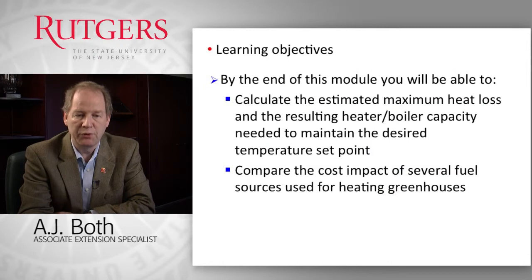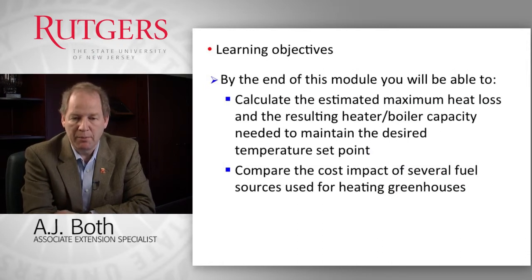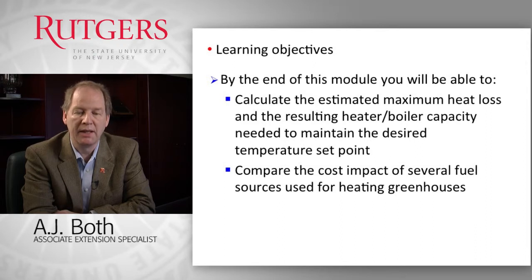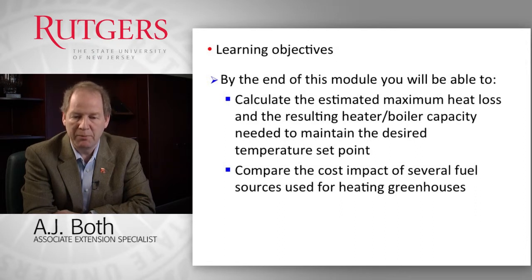The learning objectives for this module are: first, by the end of this module you will be able to calculate the estimated maximum heat loss and the resulting heater or boiler capacity needed to maintain the desired temperature set points in greenhouses; and secondly, you will be able to compare the cost impact of fuel sources used for heating greenhouses.